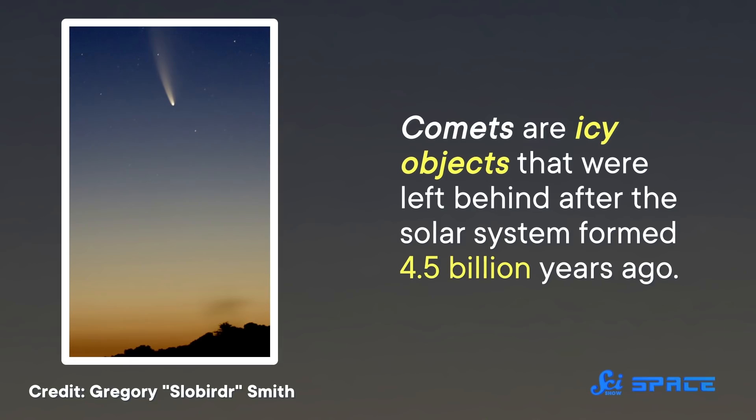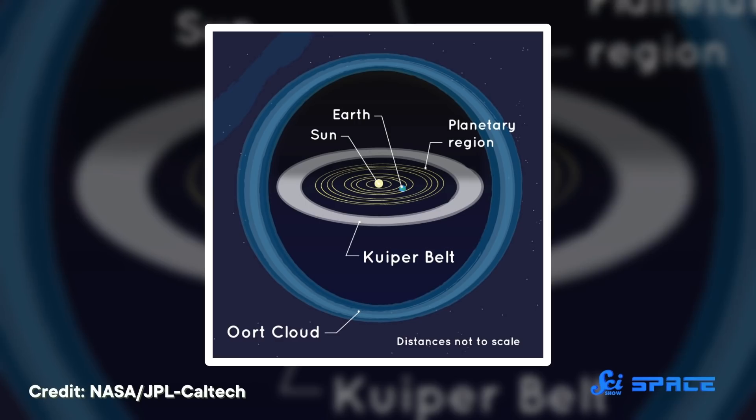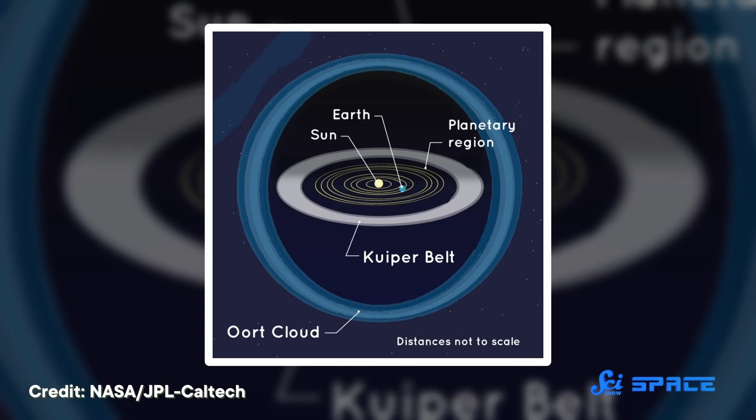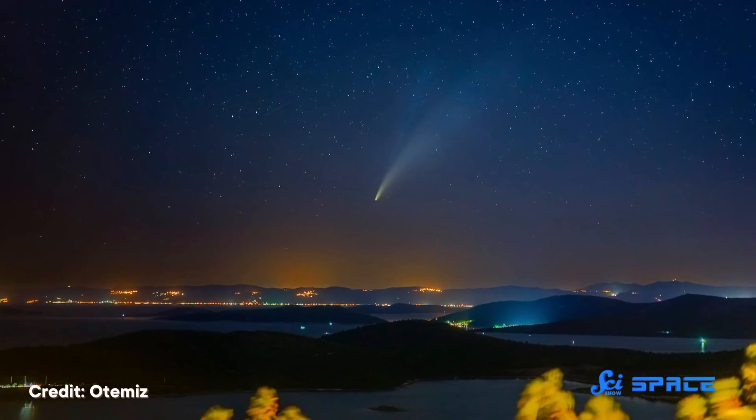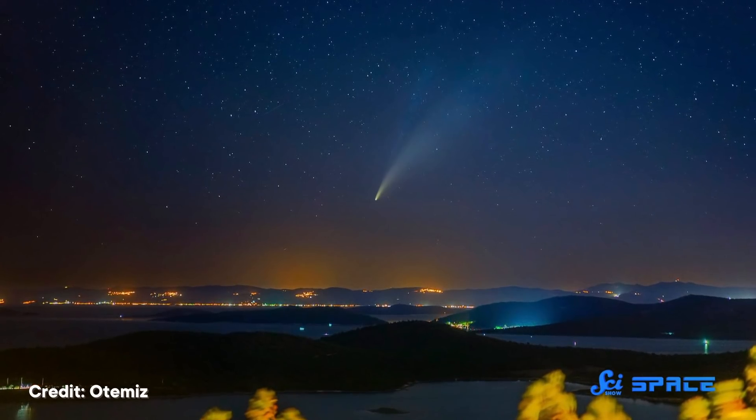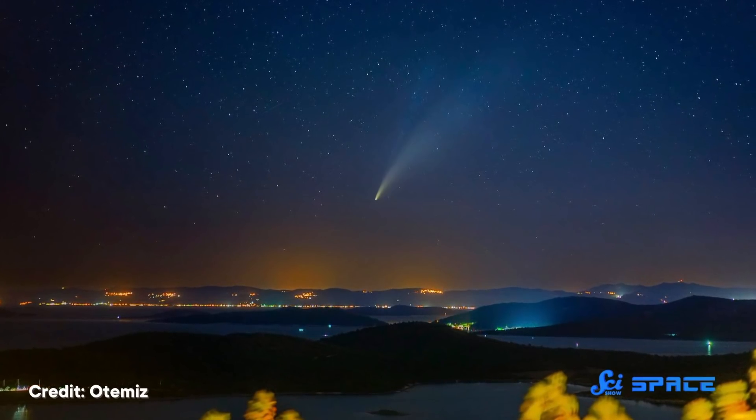Comets are icy objects that were left behind after the solar system formed four and a half billion years ago. Today, these space snowballs largely orbit the sun in the vast expanse beyond Neptune, in areas called the Kuiper Belt and the Oort Cloud. And when they're pulled onto paths that carry them into the inner solar system, they become visible from Earth.